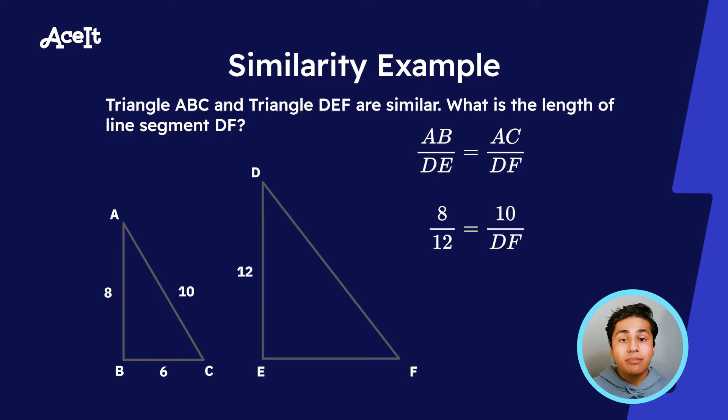We'll know that AB over DE is equal to AC over DF. Let's substitute in the values that we know. We'll get 8 over 12 is equal to 10 over side DF. Through this and some cross multiplication, we can find out that side DF is equal to 15 units.